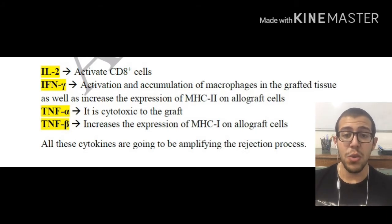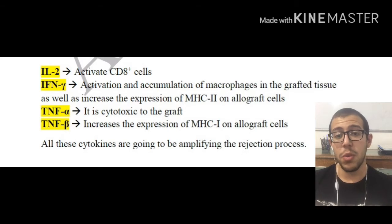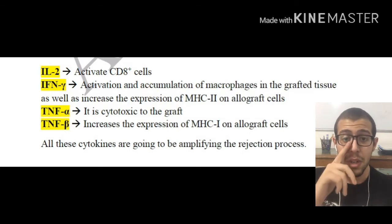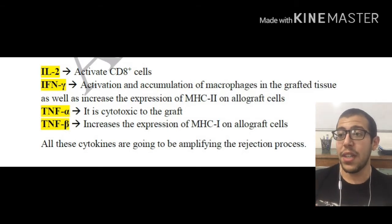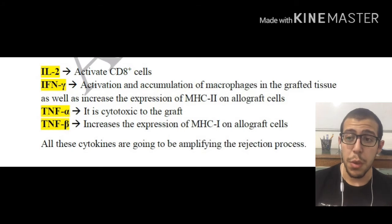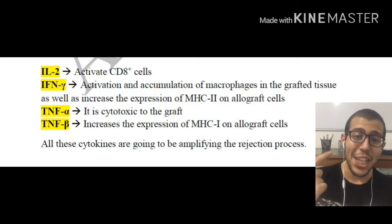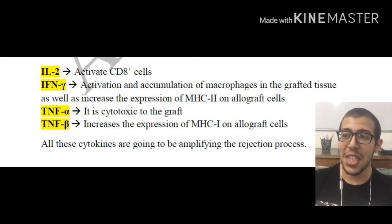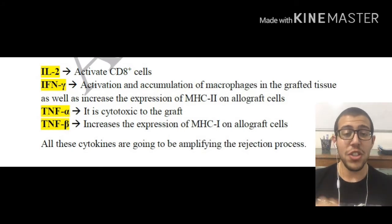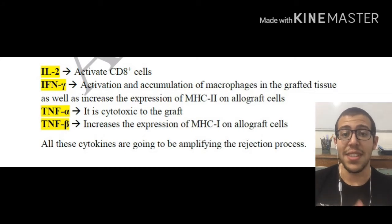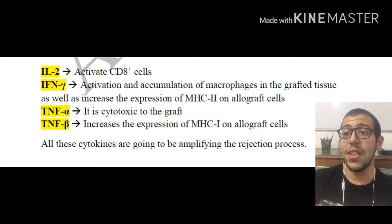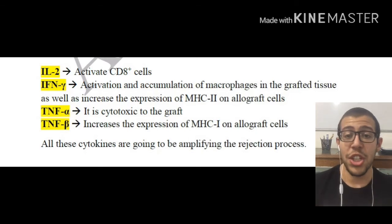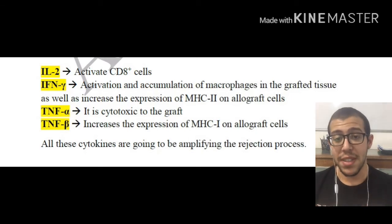Recall that MHC class 2 is very important when it comes to antigen presenting. TNF alpha is cytotoxic to the graft. TNF beta increases the expression of MHC class 1 on allograft cells, which helps in cytotoxic T cell recognition. All of these cytokines together are going to be amplifying the rejection process.